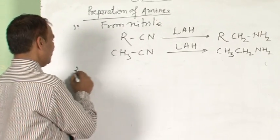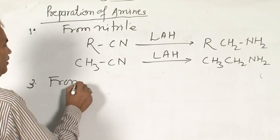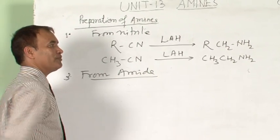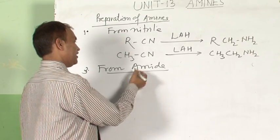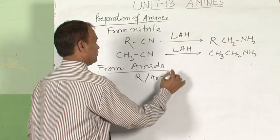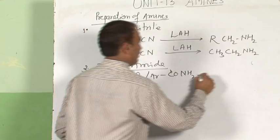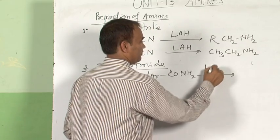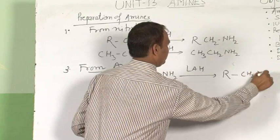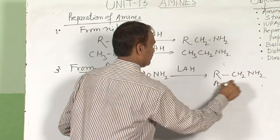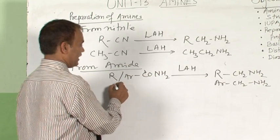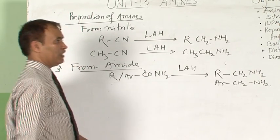The third method is from amide. Amide on reduction also gives amine. This may be aliphatic or aromatic: RCONH₂ on reduction with lithium aluminium hydride gives RCH₂NH₂. The number of carbon atoms is the same as in the amide.